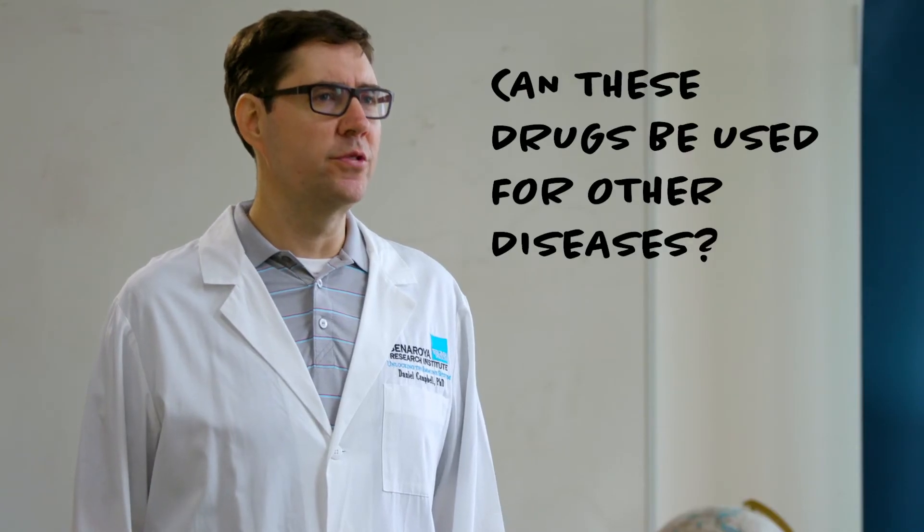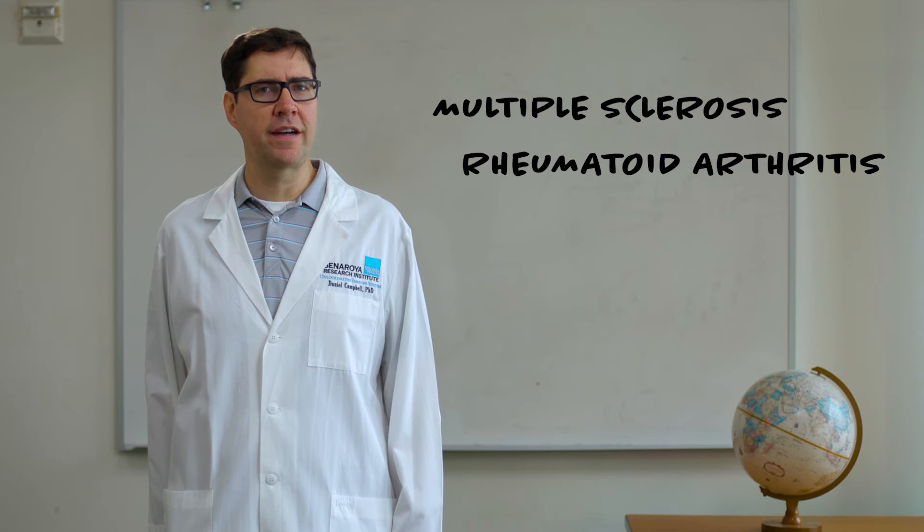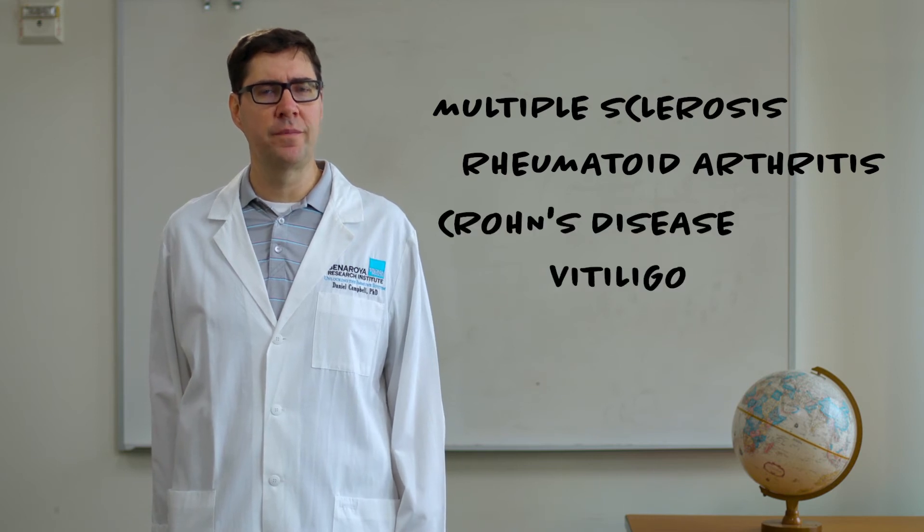Can these drugs be used to treat diseases other than type 1 diabetes? Malfunctions of the interleukin-2 system are a feature of multiple autoimmune diseases including multiple sclerosis, rheumatoid arthritis, Crohn's disease, and vitiligo. So we're hopeful that a wide variety of autoimmune disease patients will be able to benefit from these interleukin-2 based therapies.